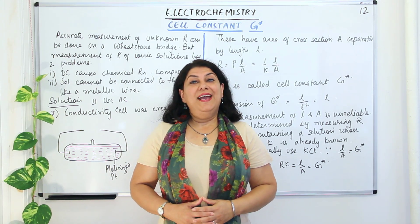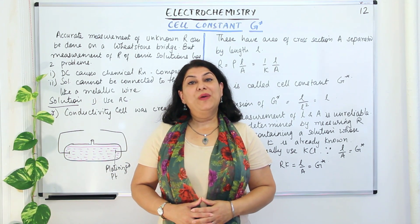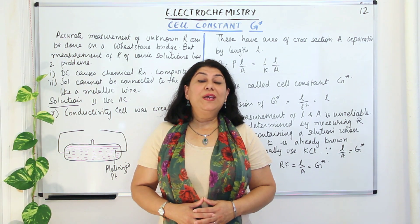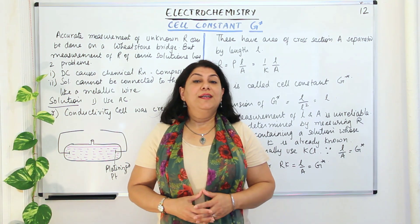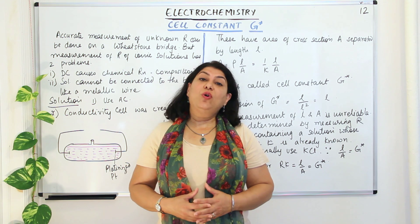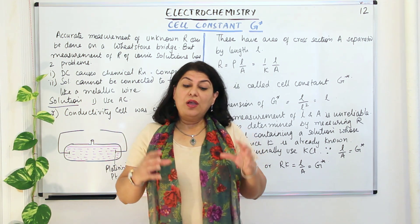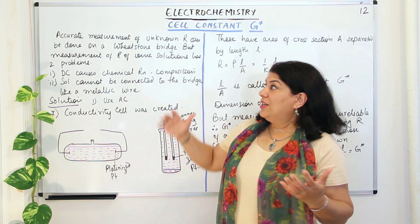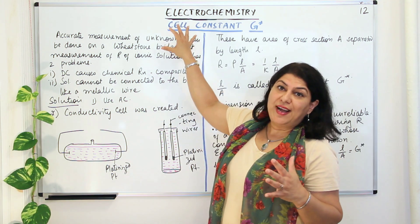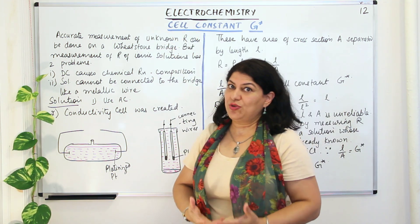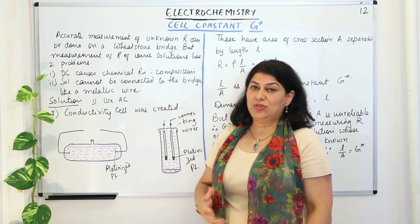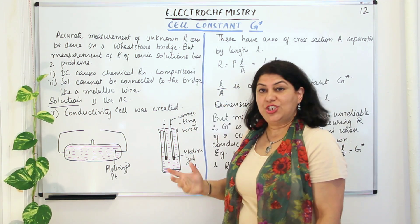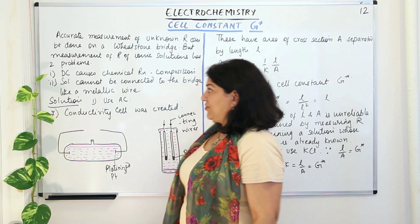Hello, I am Seema and welcome to part 12 of the chapter electrochemistry. Let us now understand how we calculate or measure the conductivity of ionic solutions. To do this we must first understand what is cell constant, also written as G* or G asterisk.